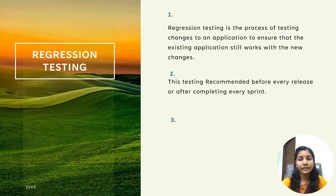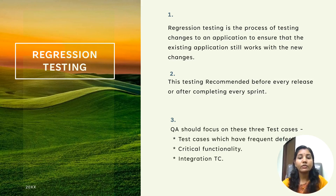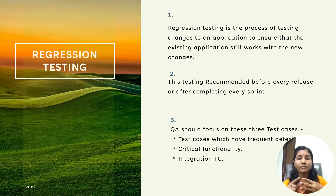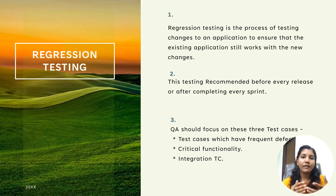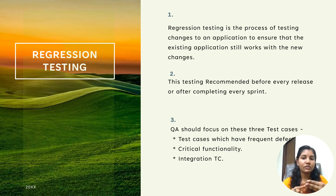Regression testing is recommended before every release or after completing every sprint. QA should focus on three types of test cases: test cases which have frequent defects, critical functionality, and integration test cases. In every 15 days it is not possible to perform end-to-end testing, so we focus mainly on these three key areas. This is the smart way for any QA to cover regression testing.